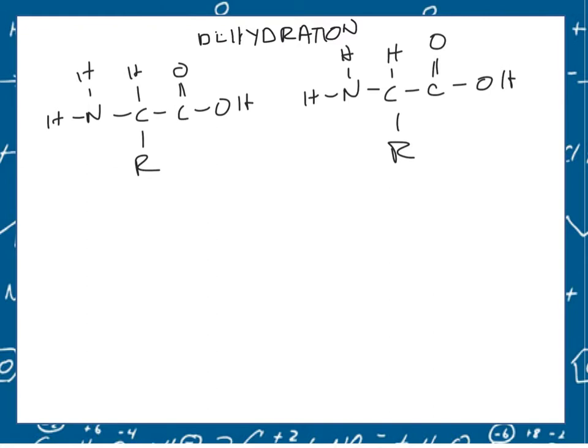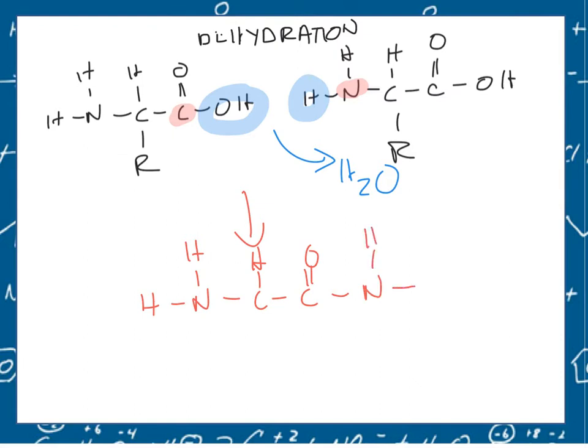So we're going to remove a water from these two molecules and join them together. Our water is going to come from the OH from this carboxylic acid and the H from this amine. So water comes out and in their place the carbon and the nitrogen are going to be joined. So the products of this are going to be water and the two amino acids joined together with this bond here in the middle, called a peptide bond.